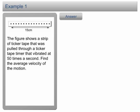Example 1: The figure shows a strip of ticker tape that was pulled through a ticker tape timer that vibrated at 50 times per second. Find the average velocity of the motion. Click on the answer button to proceed.